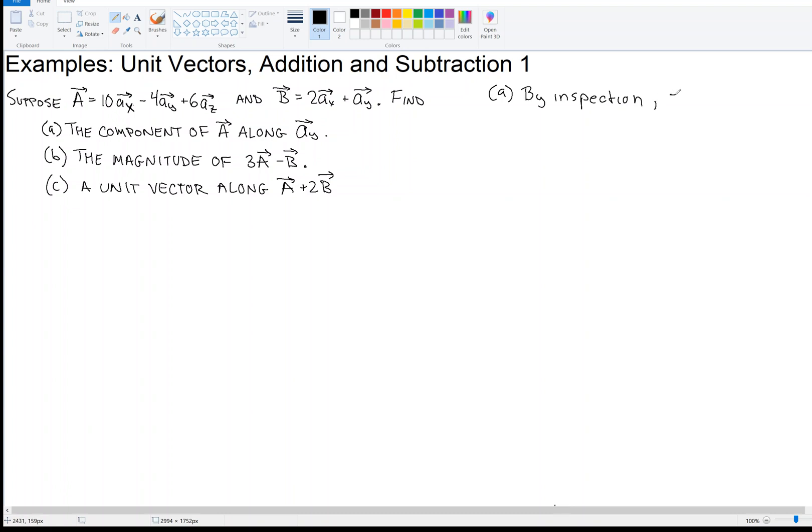So we can just read that off. How about that? If only life was that simple. Minus 4 is the answer there. Okay, so now we look at B. B is the magnitude of 3 times vector A minus vector B.